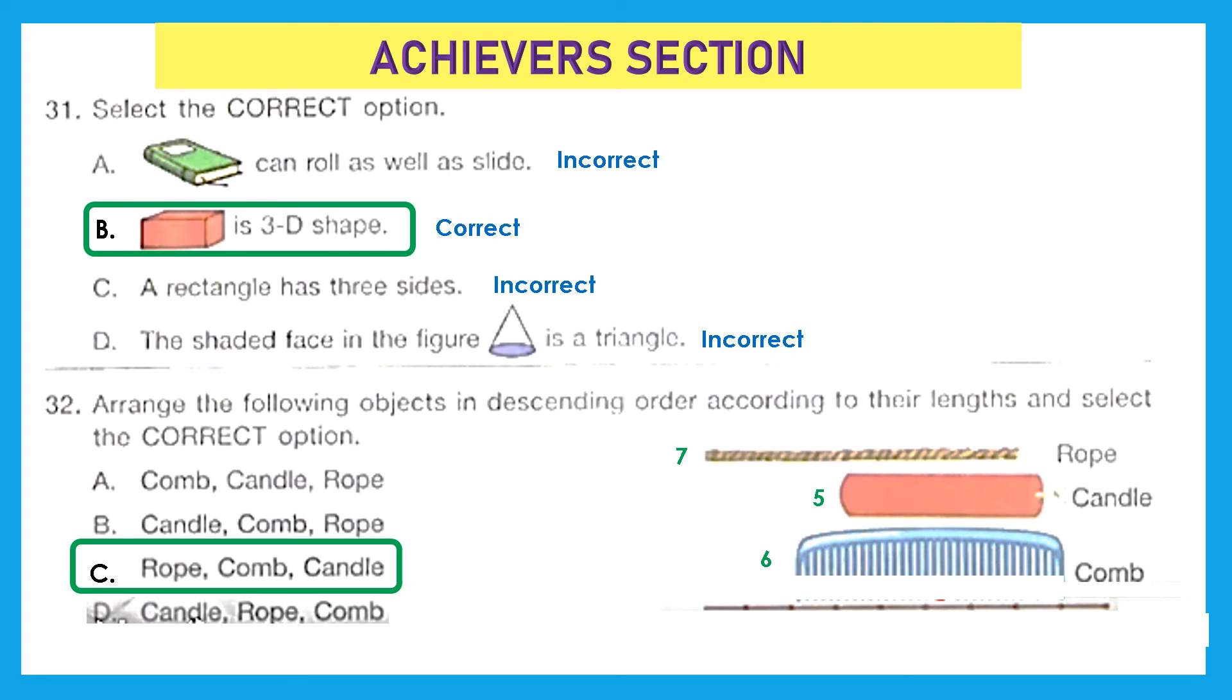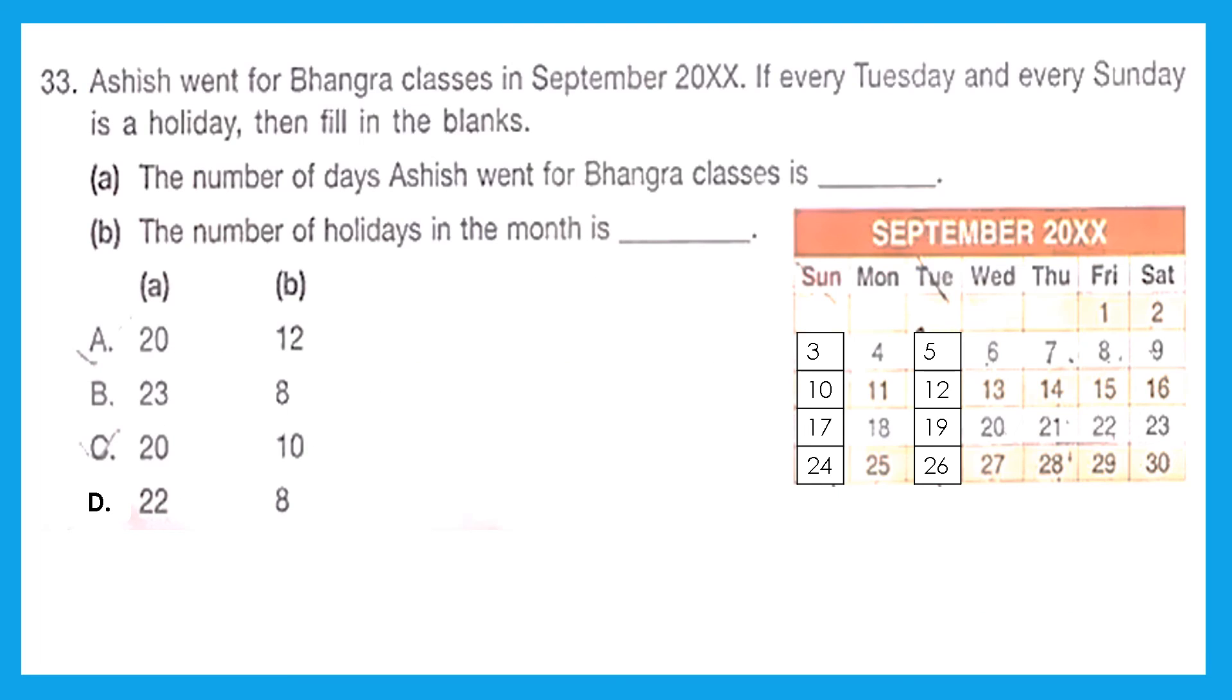Question 33: Ashish went for bhangra classes in September 20X6. If every Tuesday and every Sunday is a holiday, then fill in the blanks. The number of days Ashish went for bhangra classes is—so if we subtract all the Tuesdays and Sundays number, we'll get the working days, right? So let's do the subtraction. Subtraction would be 30, because September is having 30 days, minus 8, 4 for Tuesdays, 4 for Sundays, and we get 22. So A is 22. Then B: the number of holidays in the month is very clear, you can count it—4 plus 4 is 8. Okay, so A as 22 and B as 8 is in option D.